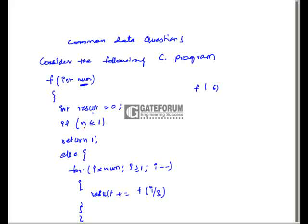If we trace with num equal to six, this will be f(6). First, the result will be initialized to zero. If n is less than or equal to one, it returns one. Here n is six, so it goes into the else loop, where i starts at six and decrements, computing result plus f(i / 3).